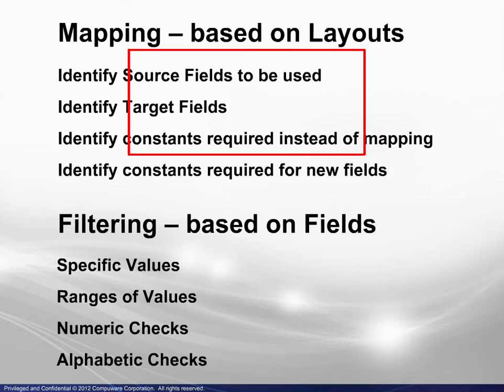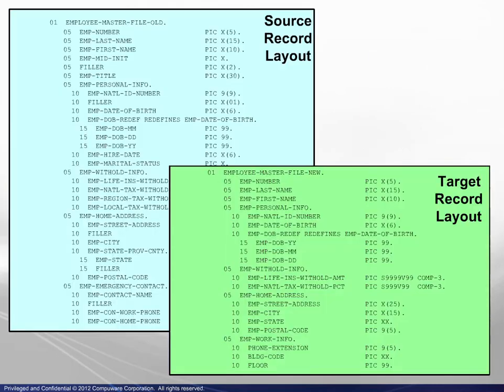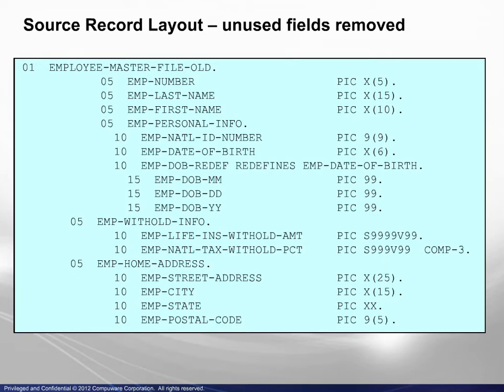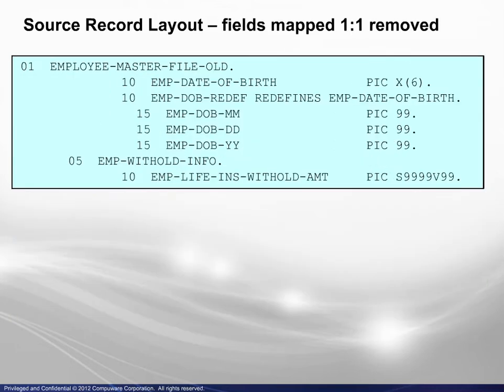We will begin with mapping. A reformat begins with the source and target record layouts. In this case, many of the source and target data names are the same. For this example, we will simplify the layouts — remember that this is the planning before going through the FileAid Reformat Setup screens. This is the full source record layout. Unused fields, those not included in the target record layout, have been removed. Next, the fields mapped one to one have been removed, leaving us with those source fields to be examined more closely.